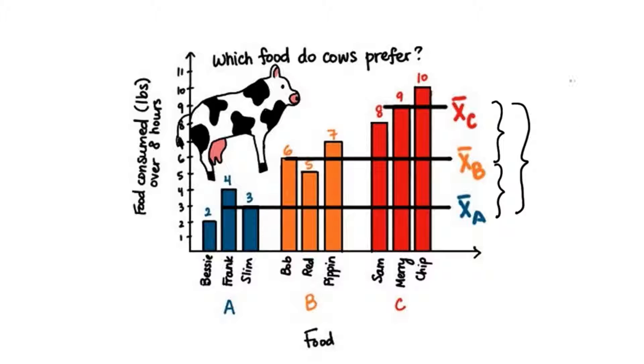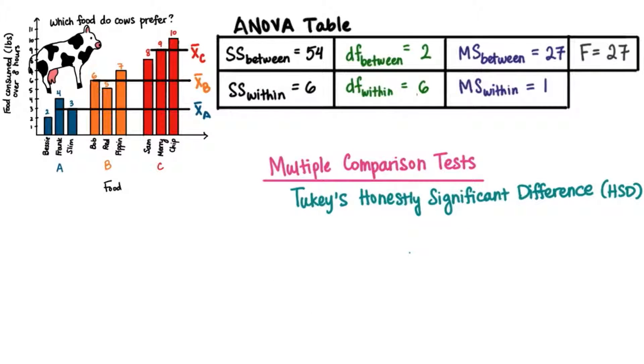In statistics, we say that this test will allow us to make pairwise comparisons. The way we calculate Tukey's HSD is just like the margin of error that you've learned before.